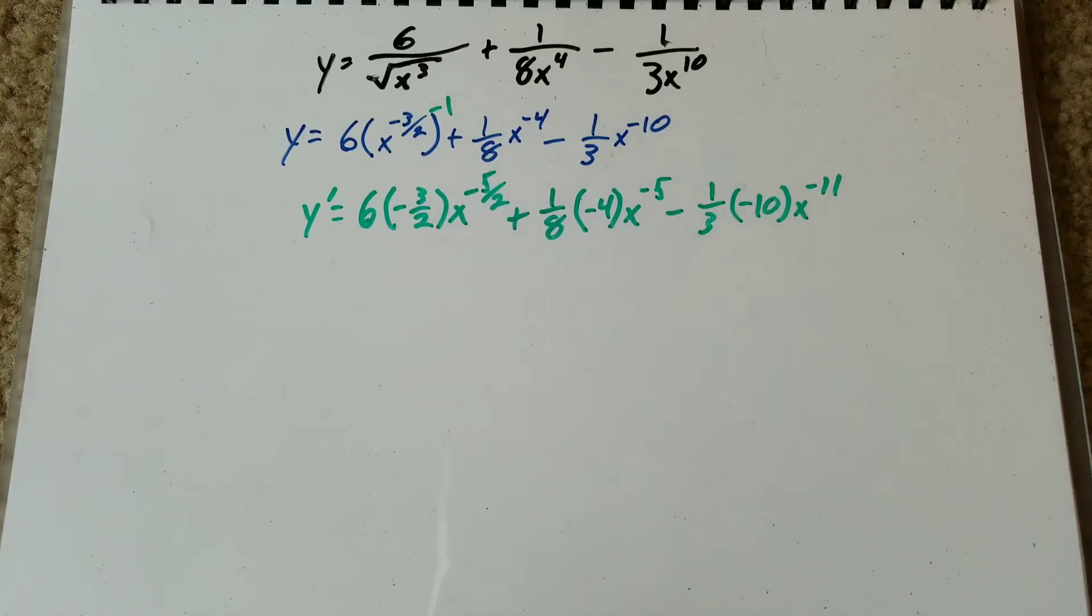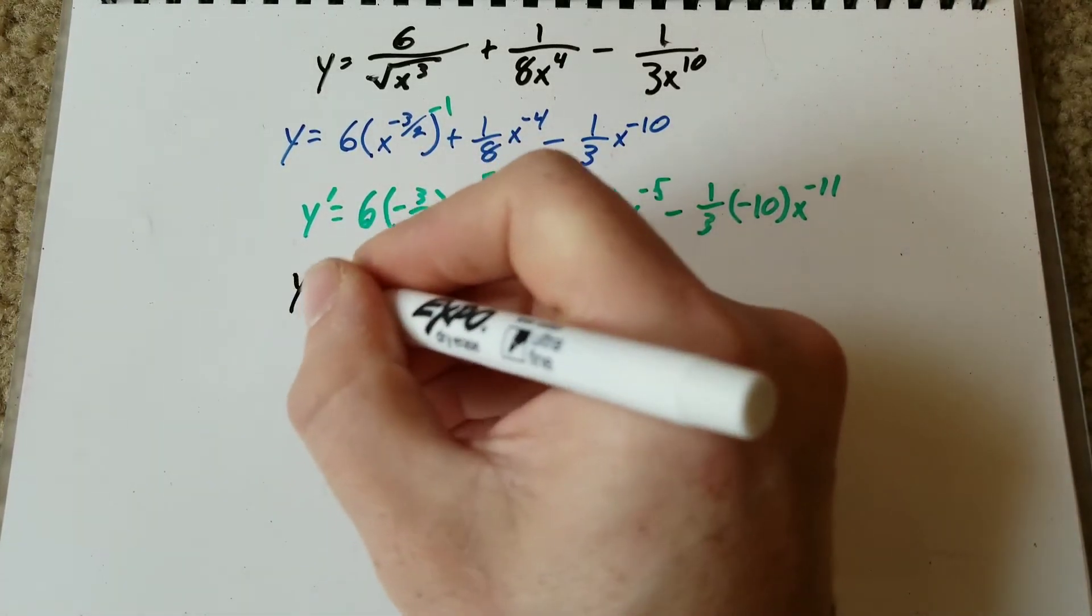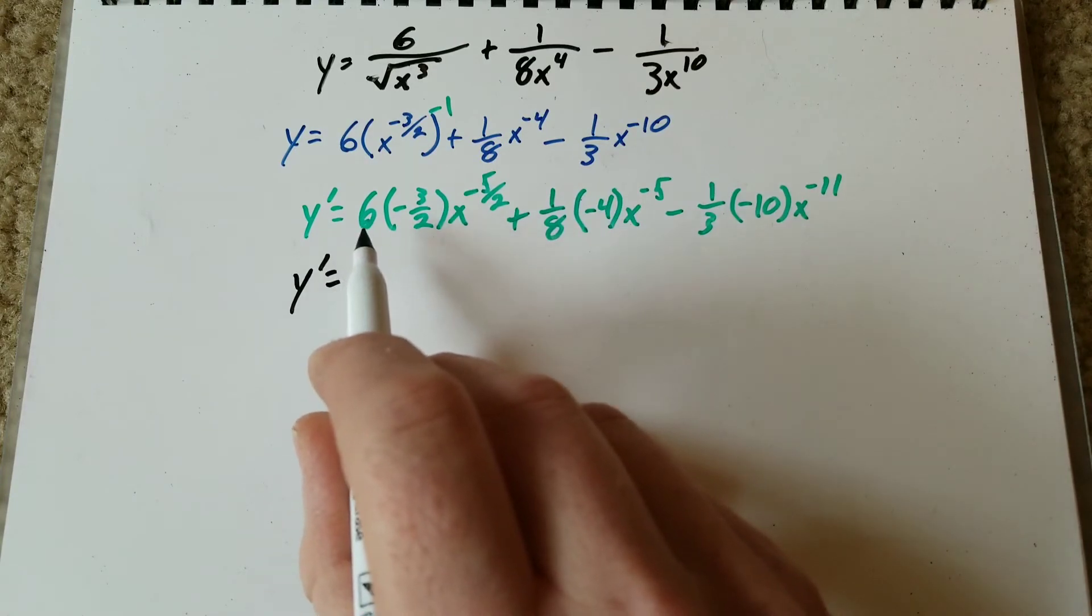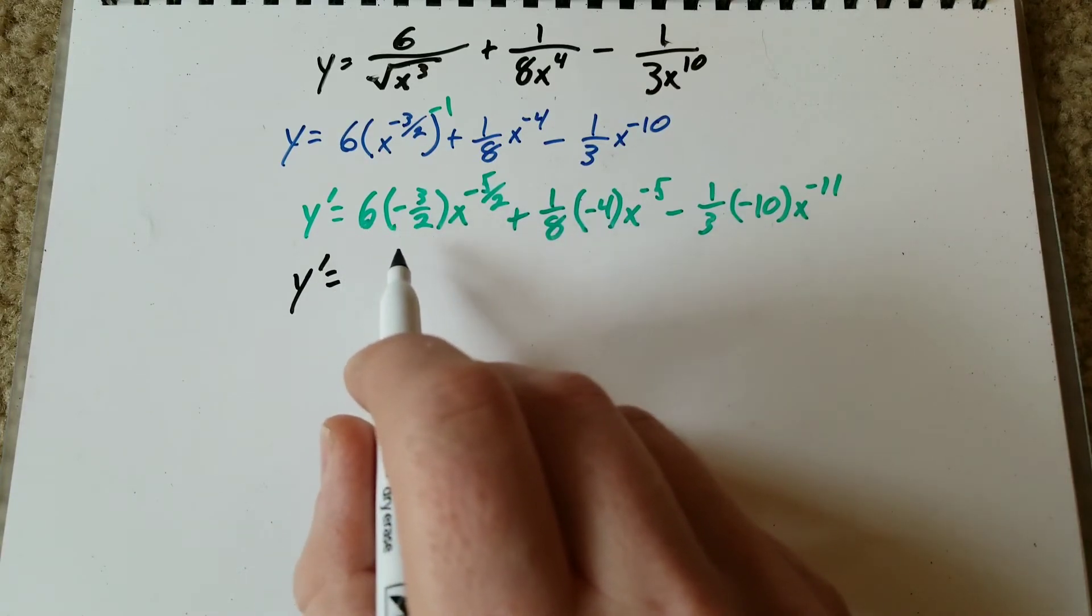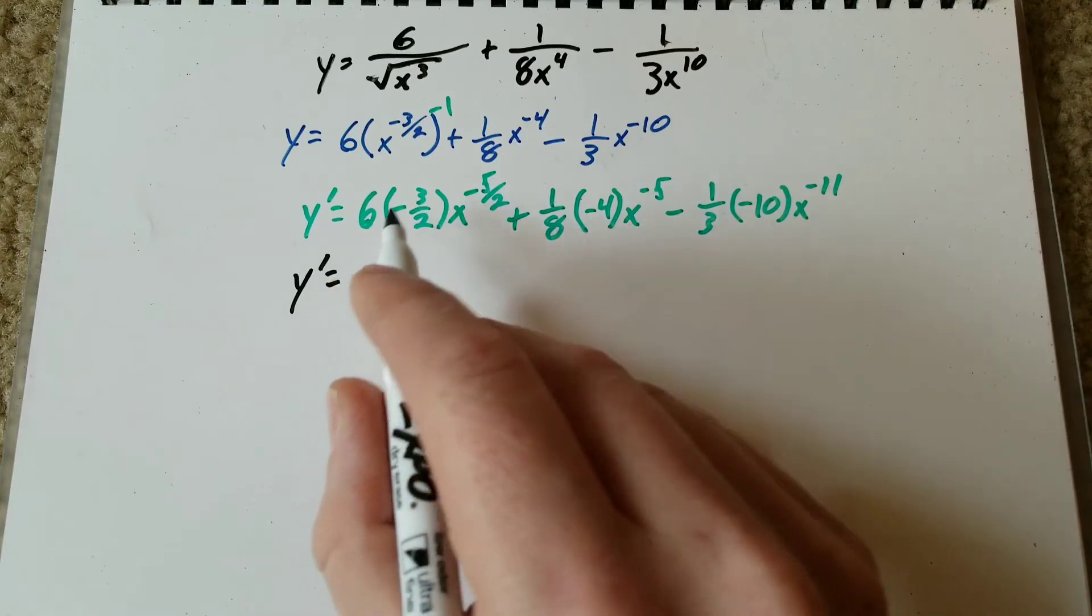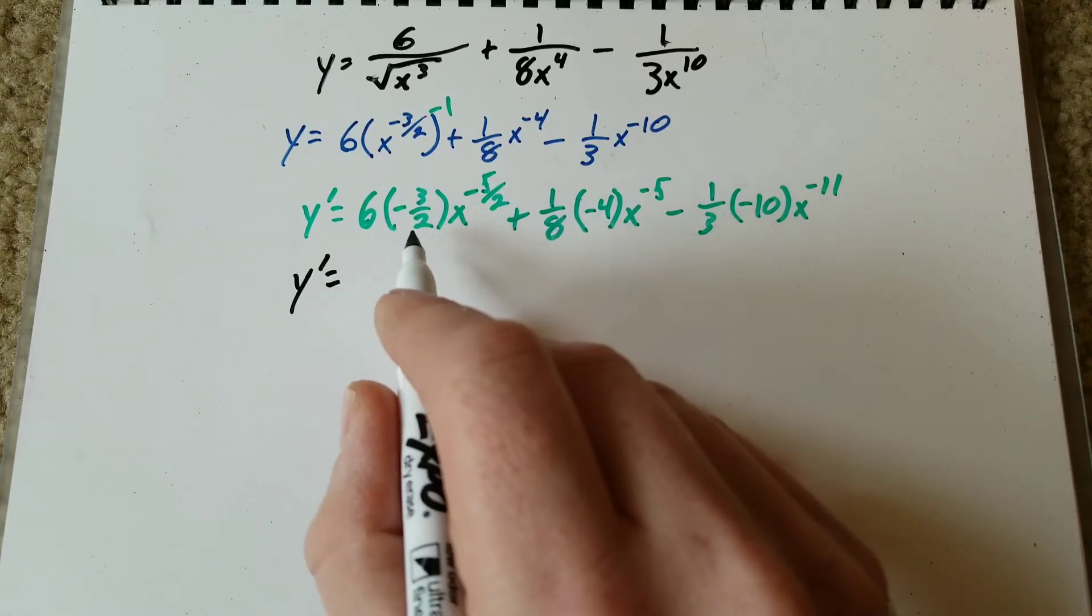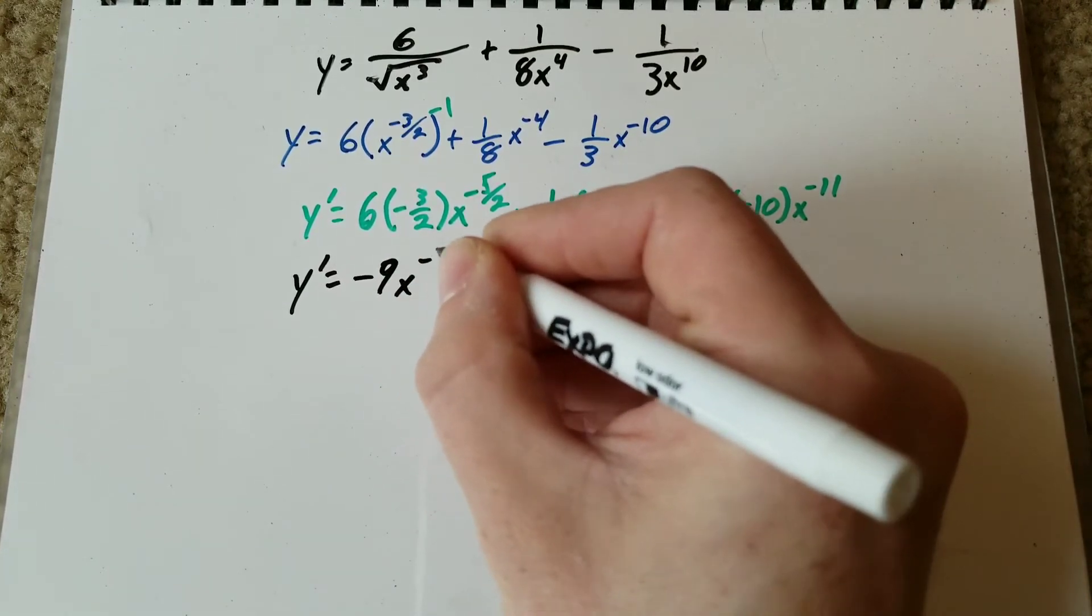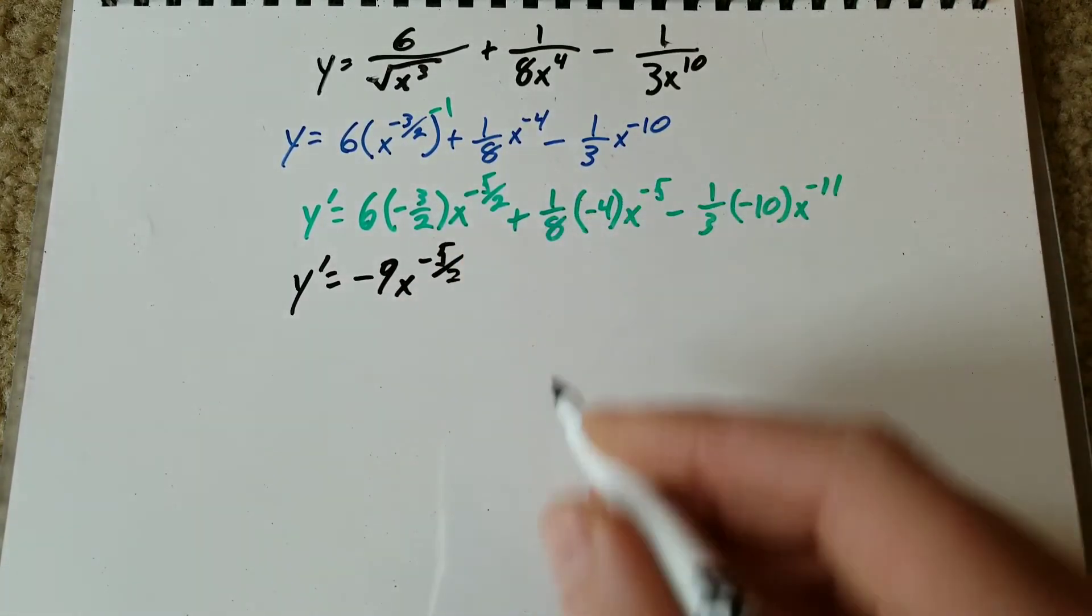So now we're just going to multiply it out, and then after that we'll clean it up in the next step. So we've got y prime equals, we've got six times negative three halves. That gives us negative 18 halves, so that becomes negative nine x to the negative five halves plus,